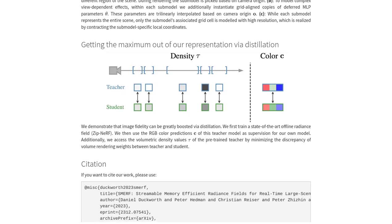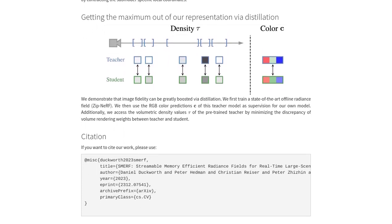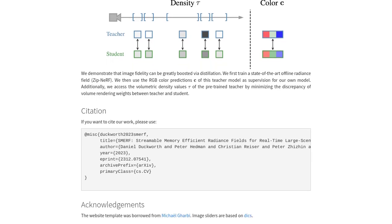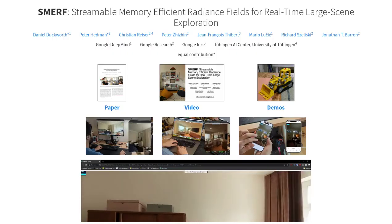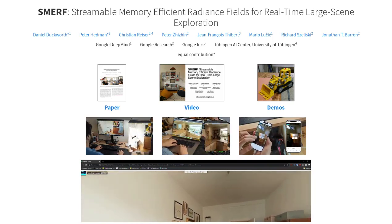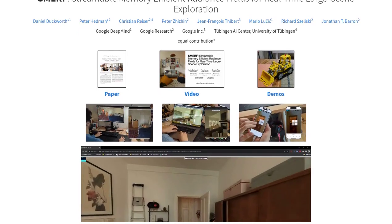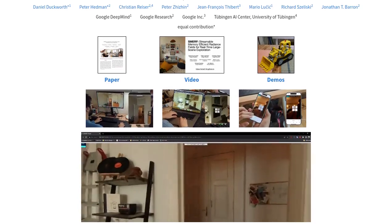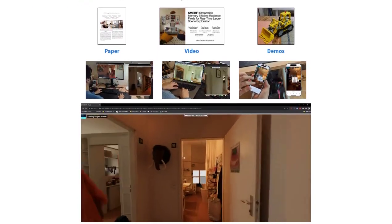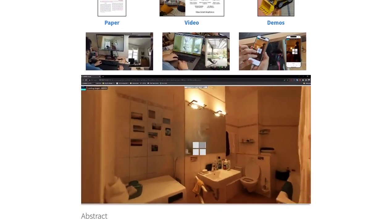In conclusion, Smurf is a game-changer in real-time 3D rendering. Its impressive visuals and ability to navigate through reflective surfaces have left users in awe. With potential applications in real estate and capturing 3D memories, the possibilities are endless. And with its open-source nature, the future of Smurf is in the hands of the AI community. So buckle up, folks — the world of real-time 3D rendering just got a whole lot more exciting with Smurf. Stay tuned for more updates and let your imagination run wild.